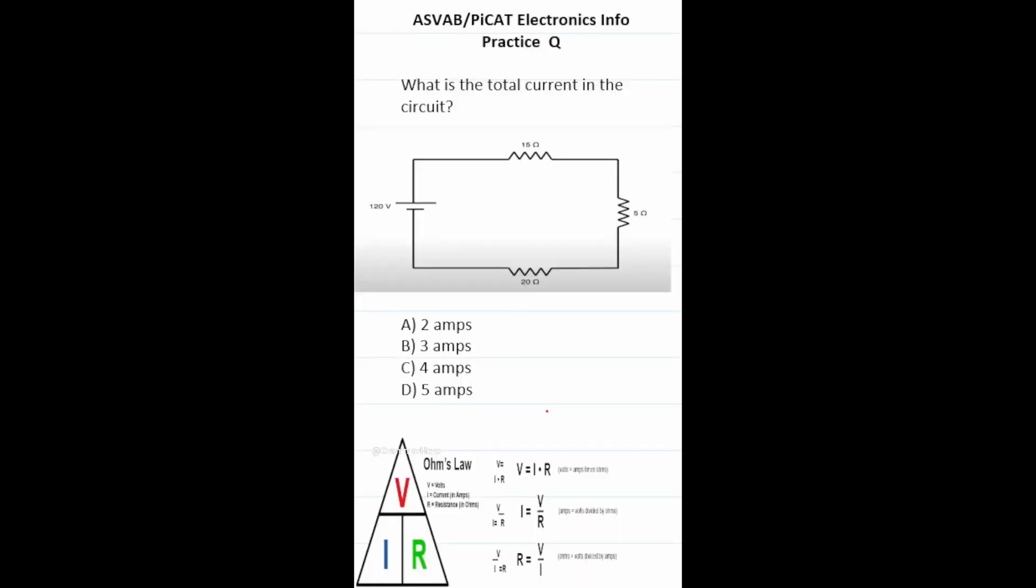ASVAB PiCAT Electronics Information Practice Test question says, what is the total current in the circuit? To answer this one, you have to understand that we're looking at a circuit that is in series. In addition, we have to know Ohm's law, which says voltage equals current I times R, which is resistance. This symbol here, here, and here are resistors.